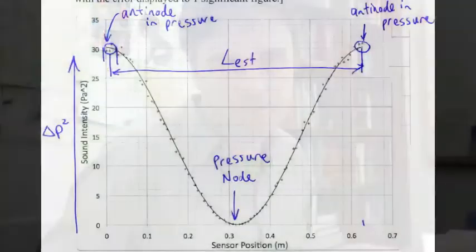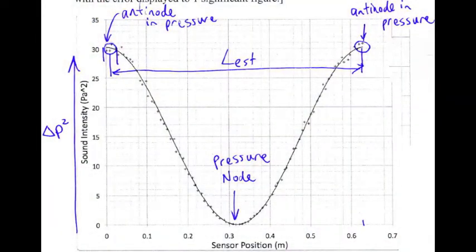As for my solutions, let's take a careful look through them. Here's my little annotated graph, labeling the anti-nodes in the pressure at the two ends, separated by about 63 cm, and a pressure node in the middle.